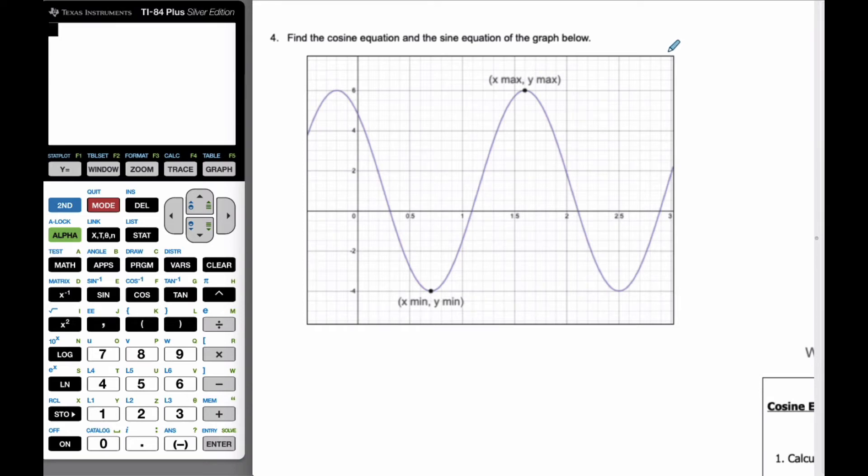All right, so now what we're going to do, we're going to look for the cosine equation and the sine equation when we're given a graph. And when we do it, I'm going to talk about this point is a minimum point, and so we'll call it the x min, the y min, referring to that fact that it's referring to the minimum, not that it's the smallest x value. And similarly with the maximum.